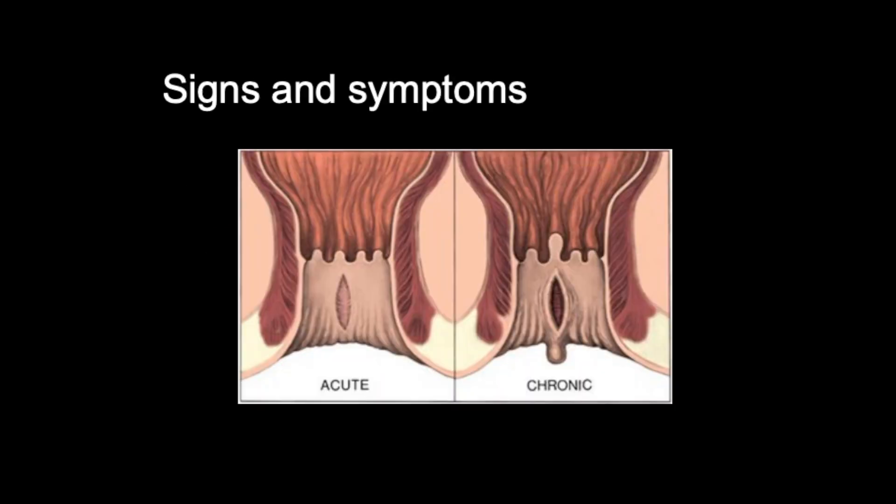We're going to discuss the signs and symptoms of anal fissures. The key thing is that someone's going to usually complain of anal pain with defecation with or without bright red bleeding and anal spasm. An external examination may reveal a linear split in the anal mucosa. If you cast your minds back to the earlier section, we discussed acute and chronic anal fissures. Acute was duration of less than six weeks, chronic greater than six weeks. You're going to see slightly different clinical features.